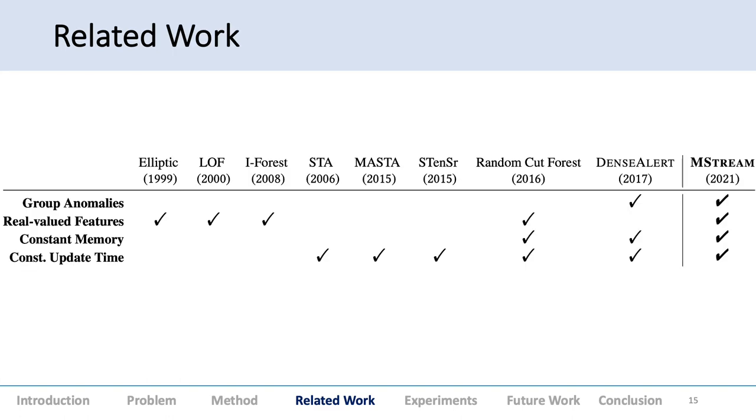These are the baselines we used for comparing M-STREAM. We have three popular cyclic-learned algorithms: elliptic envelope, local outlier factor, and isolation forest. We had three baselines doing anomaly detection in streaming scenarios for multi-aspect streams: STA, MASTA, and STenSy. We had two recent methods: random cut forest used by Amazon, and DenseAlert, which was a paper by a group at CMU.